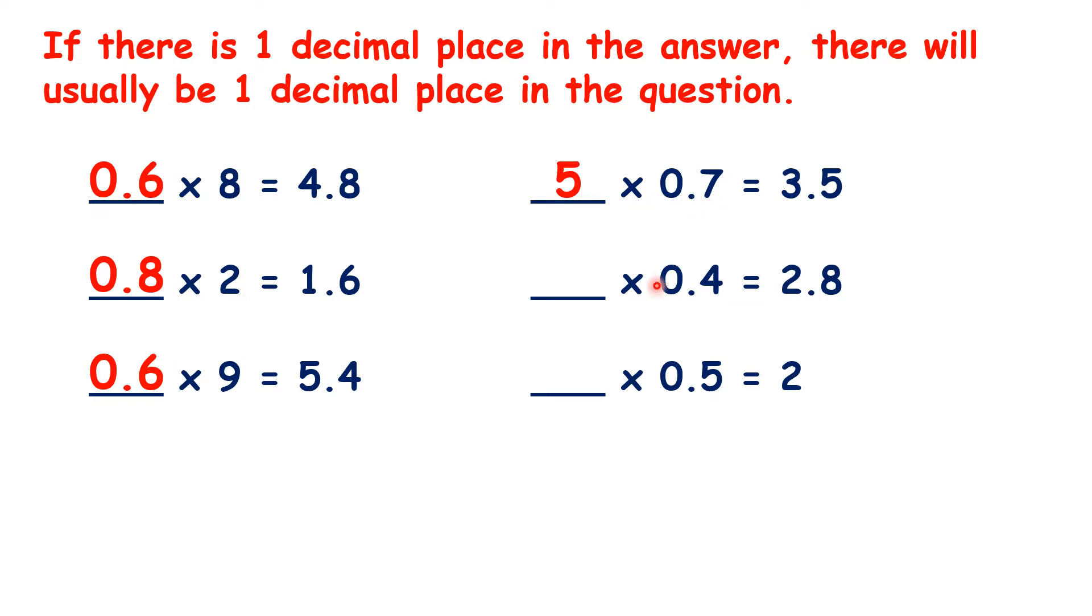And it's the same for our next question. We know that 7 times 4 is 28, so 7 times 0.4 is 2.8.